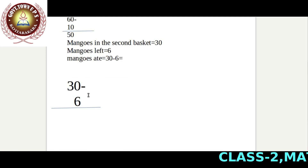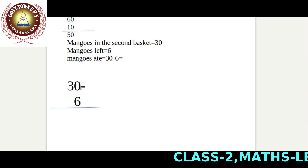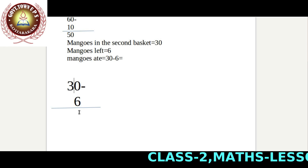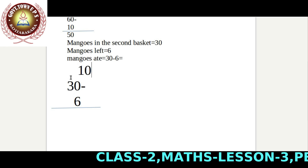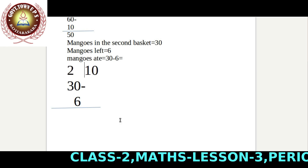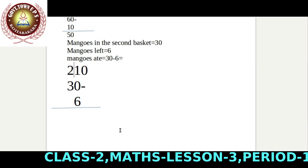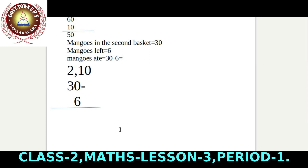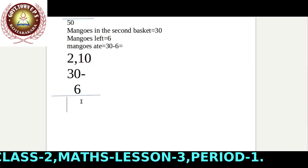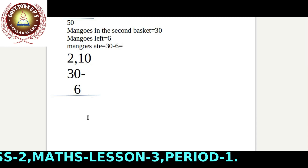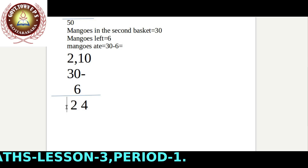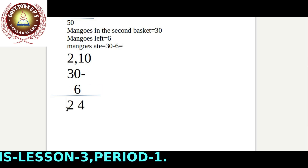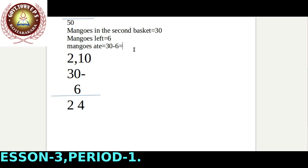So, how we subtract six from thirty? We start subtracting six from the ones place. From zero, we cannot subtract six. So we take one ten from this three. Now it becomes ten. Only two tens remaining. We subtract six from ten, that is four. Here, we subtract nothing from two, so two remains. The answer is twenty-four. Mangoes eaten from the second basket is twenty-four.